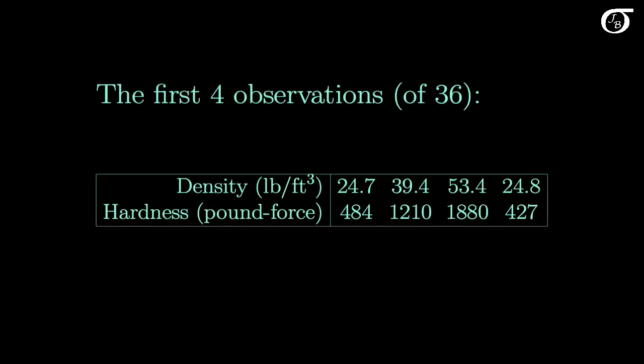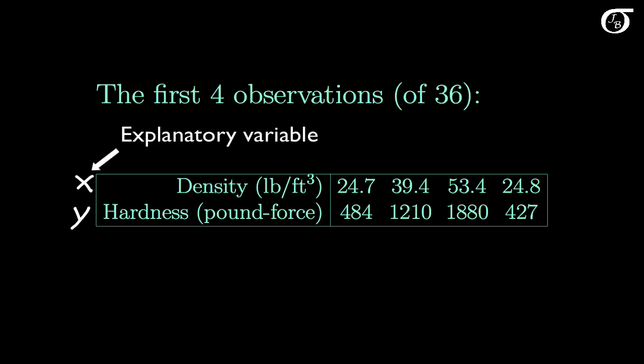There are 36 observations in the data set, but only four are listed here to make it a little bit easier to see. If we are using one variable to predict the other, we call the variable that we are predicting Y. So Janka hardness is our Y variable, and the variable we are using to predict it is our X variable — density. I'm going to call the X variable the explanatory variable and the Y variable the response variable. Some places might refer to X as the independent variable and Y as the dependent variable, but I prefer to use the terms explanatory and response.